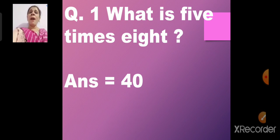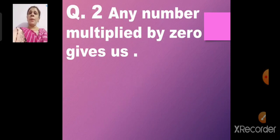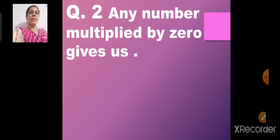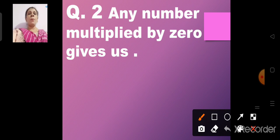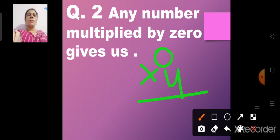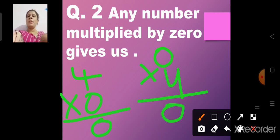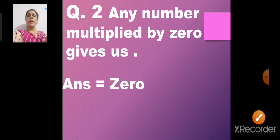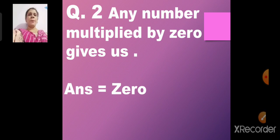That means we will take 8 five times. Question number 2: Any number multiplied by 0 gives us — what, children? I taught you this before. If 0 fours are 0, and 4 zeros are also 0, then any number multiplied by 0 gives us 0 only.